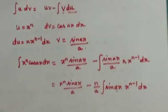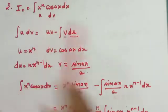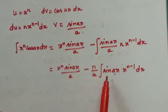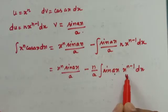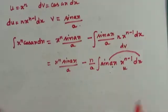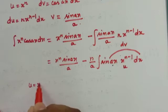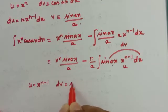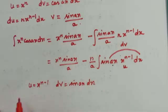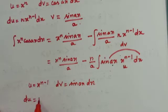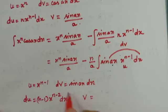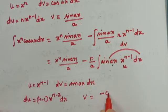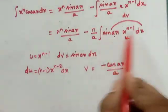So again you have to integrate. Since the given problem is in terms of cos, we need the integration back in terms of cos, so you have to apply integration by parts again. This integral is again of the u dv form. So u is x power n minus 1 and dv is sin ax dx. Differentiating u gives n minus 1 into x power n minus 2 dx, and integrating dv: integration of sin ax is minus cos ax by a.